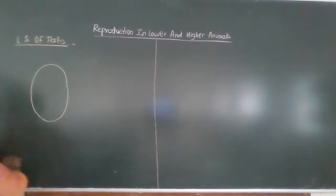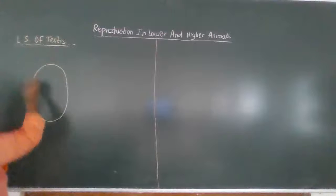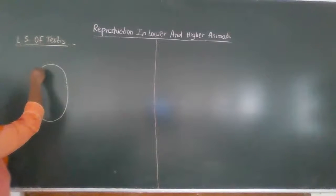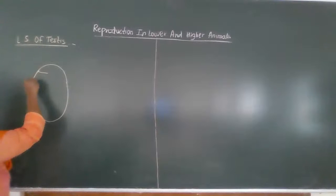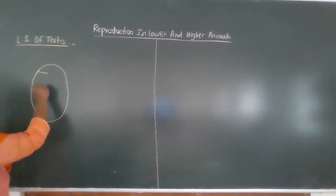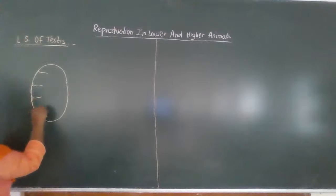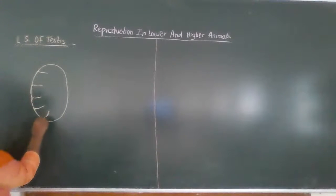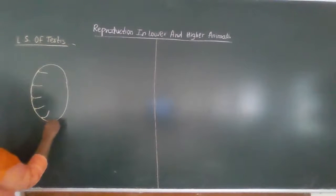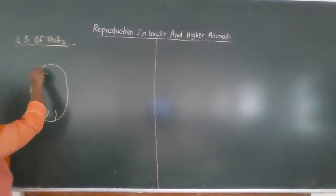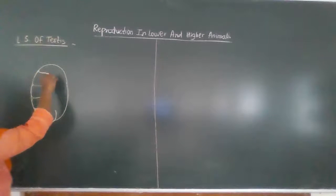This layer is called the tunica albuginea layer. This tunica albuginea forms the inner foldings, and forms a number of septa. This septum divides the testes into a number of testicular lobes. These are the testicular lobes.